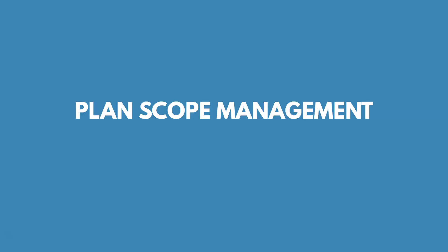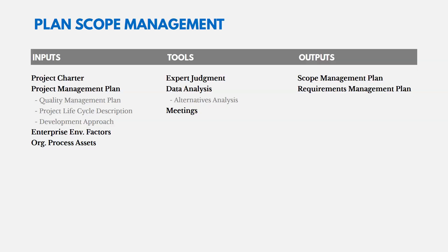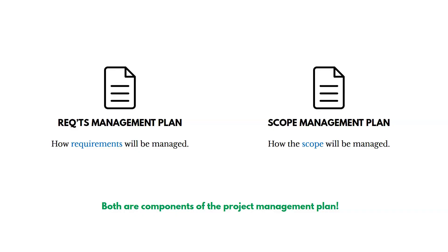Let's look at the first process, Plan Scope Management — documenting how scope will be defined, controlled, and how we'll collect requirements. Focusing on the outputs: the scope management plan and the requirements management plan. The requirements management plan documents how requirements will be managed and collected from customers. The scope management plan describes how scope will be managed, what techniques and methods we'll use. Both of these are components of the project management plan.